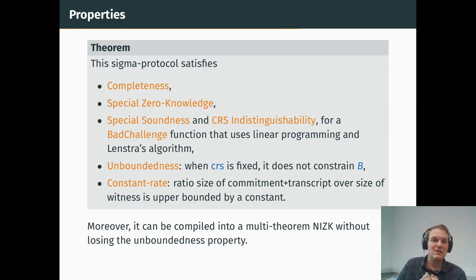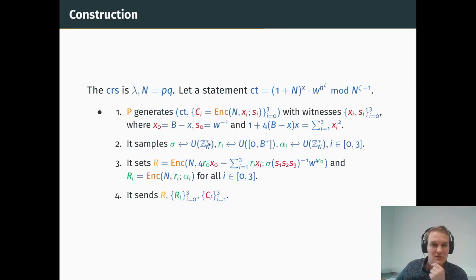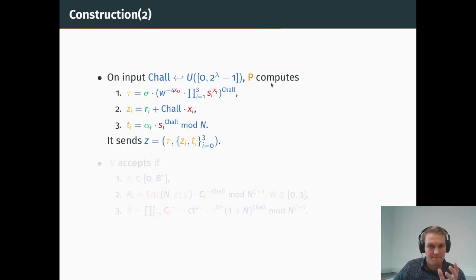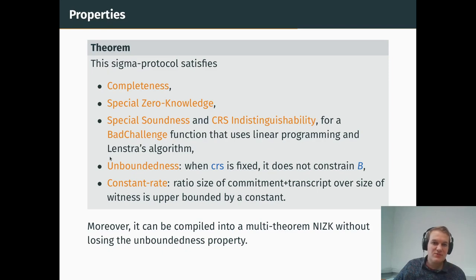And in the end, we see that this sigma protocol is satisfying all of the desired properties. So first, it is complete. It satisfies the special zero-knowledge property. It also has the special soundness and CRS indistinguishability. And the BadChallenge function is actually a bit complicated, because it uses linear programming and then Lenstra's algorithm. But the important result is that it satisfies unboundedness. So it means that when we fix N, so the CRS is N, p times q. And the thing is, we are not constraining the value b here at all. Because whatever value b you take here, then we will take the ζ for the commitment accordingly. So this is why we reach unboundedness.